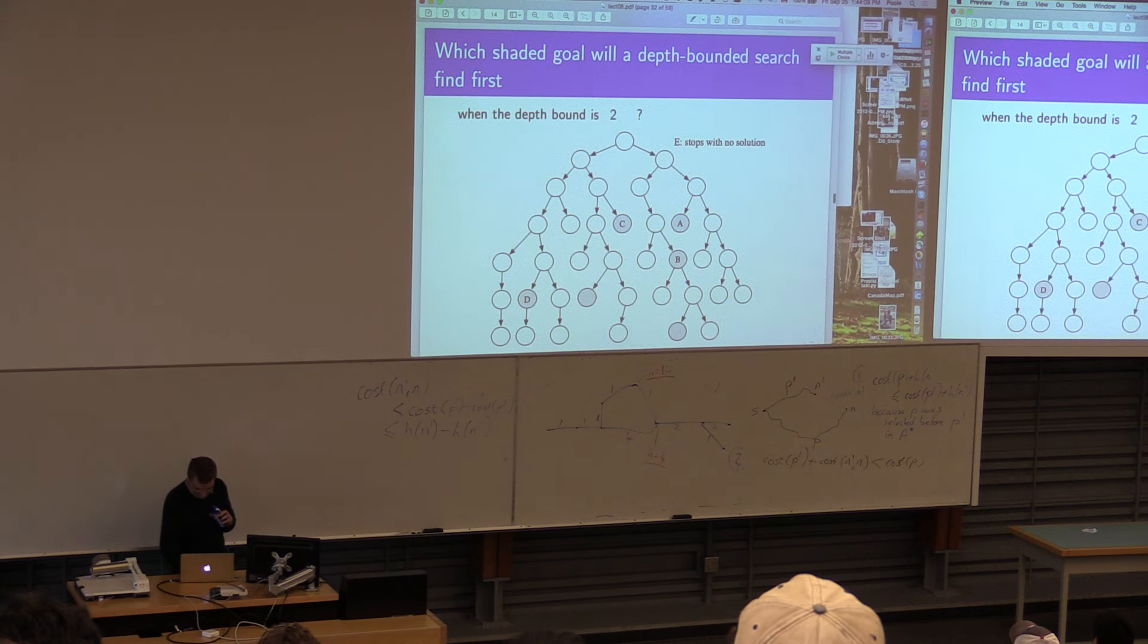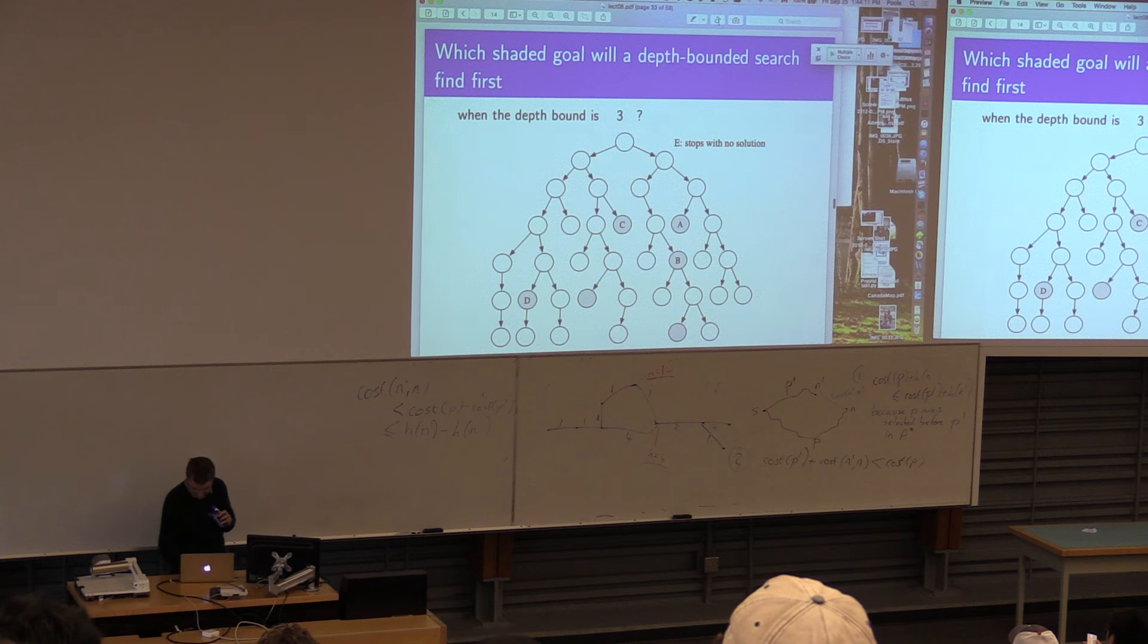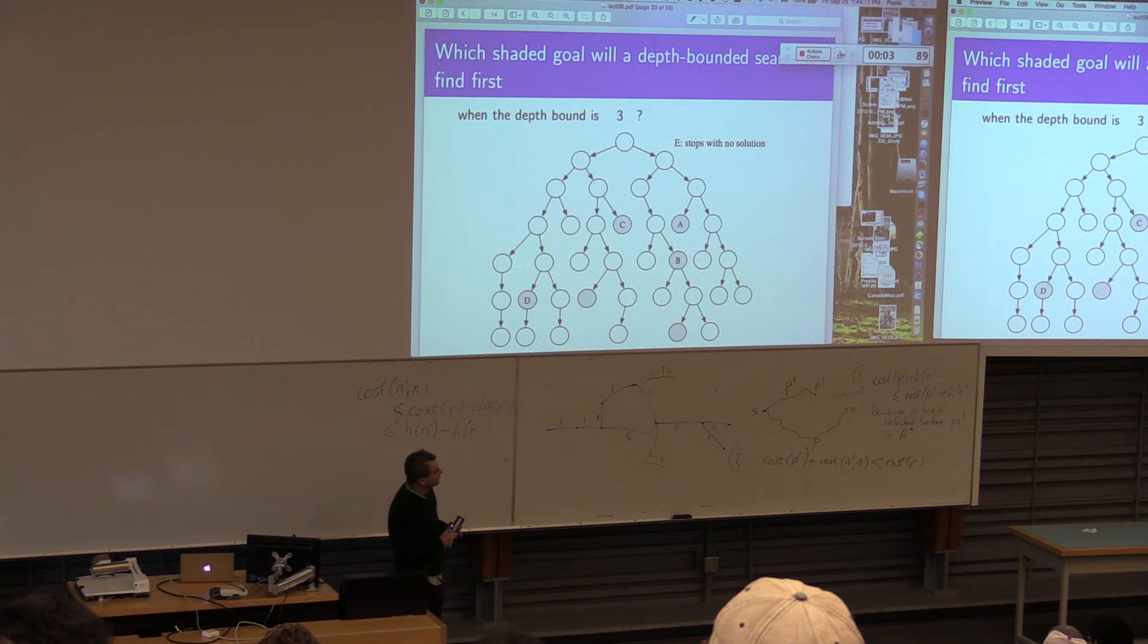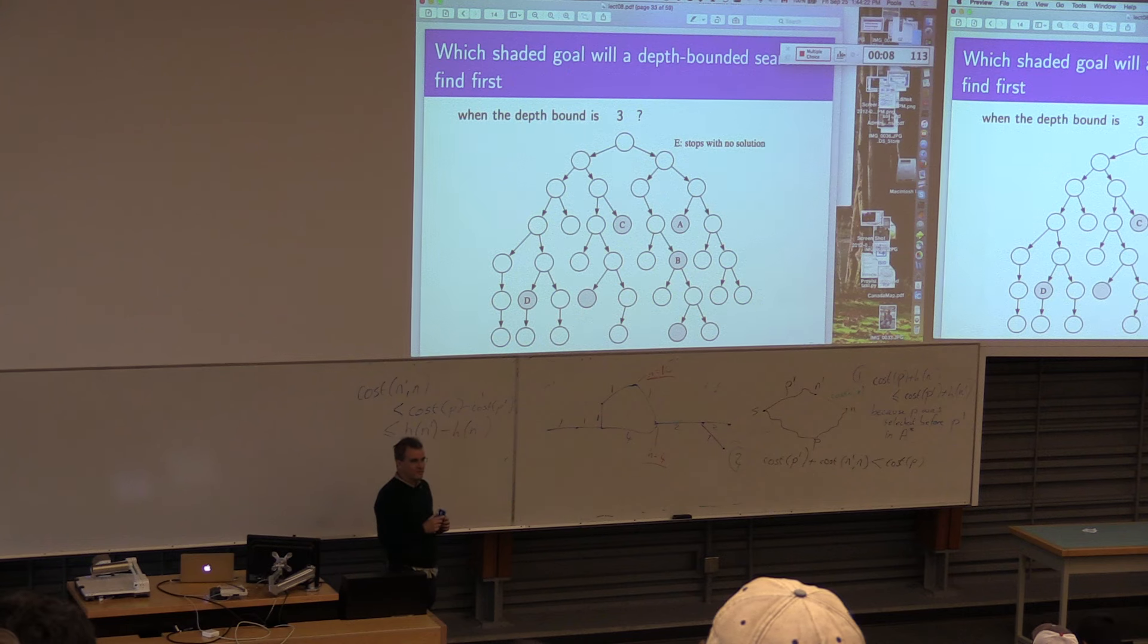What about when the bound is three? What's it going to do? It's going left right. It's the same way you did before. You can always choose left before it turns right. That's my assumption in these graphs.